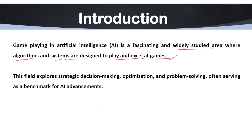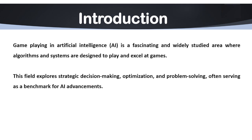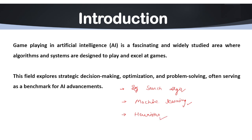AI techniques are used here because they combine the elements of strategy, decision making, optimization, and problem solving in a controlled environment. AI game playing systems rely on algorithms such as search algorithms, which help explore possible moves and outcomes; machine learning, which helps learn strategies through data and experience; and heuristics, which help make decisions efficiently in complex scenarios.